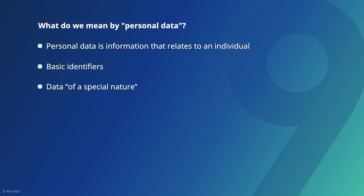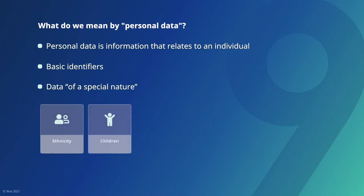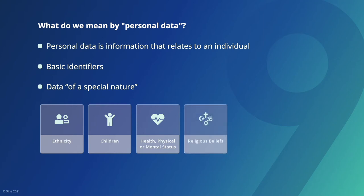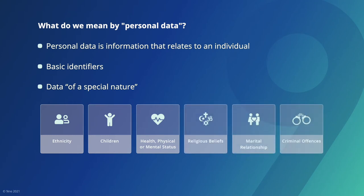Certain types of personal data are recognized under law as of a special nature. This includes information such as data on ethnicity, children, health or physical or mental status, religious beliefs, marital relationships or criminal offences. These categories of data of a special nature are similar to those found in other jurisdictions such as the European Union. This data requires organizations to take extra precautions to ensure such data is processed lawfully.